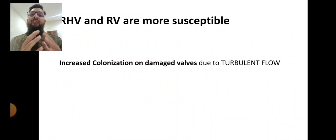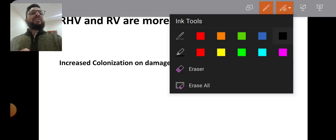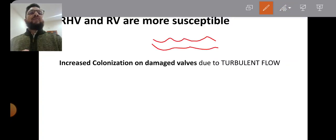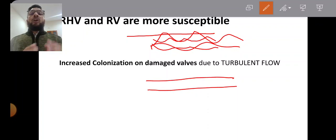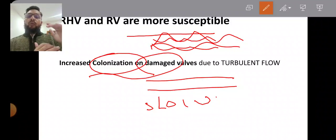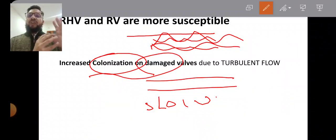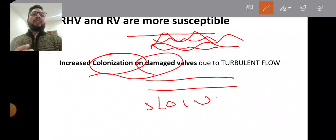Rheumatic heart valves and replaced valves are the main susceptible sites for infective endocarditis. Whenever there is a damaged valve, blood flow becomes turbulent rather than laminar. Turbulent and slow, irregular flow gives bacteria the chance for colonization on those valves. This is why damaged and replaced valves are the main focus and most susceptible to infective endocarditis.